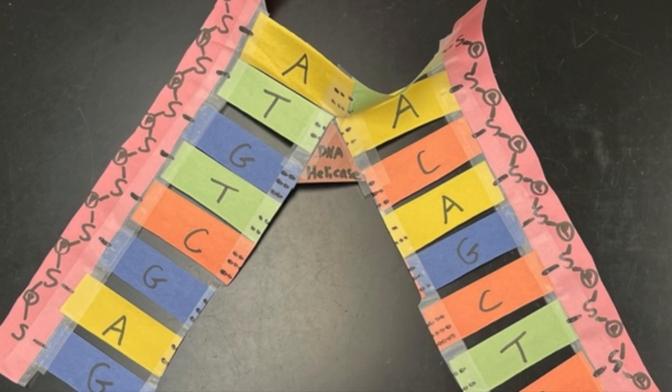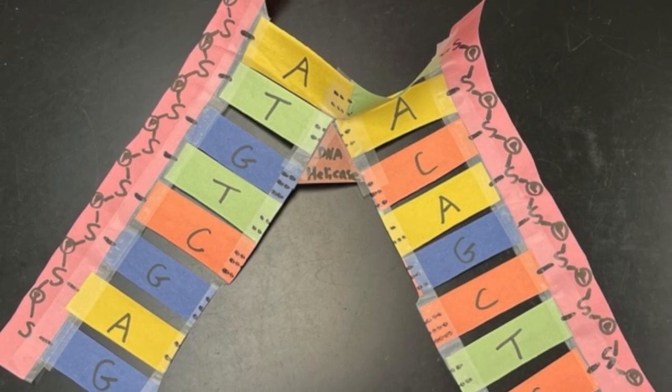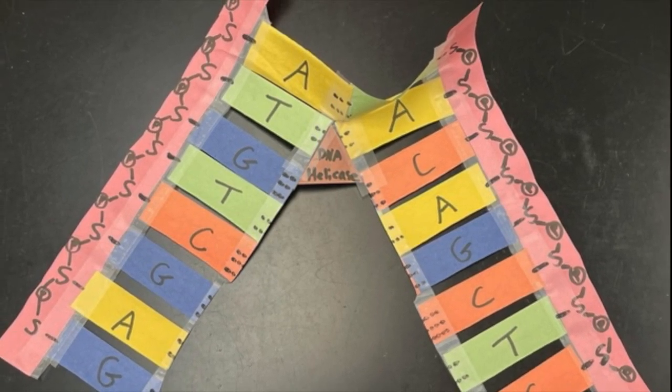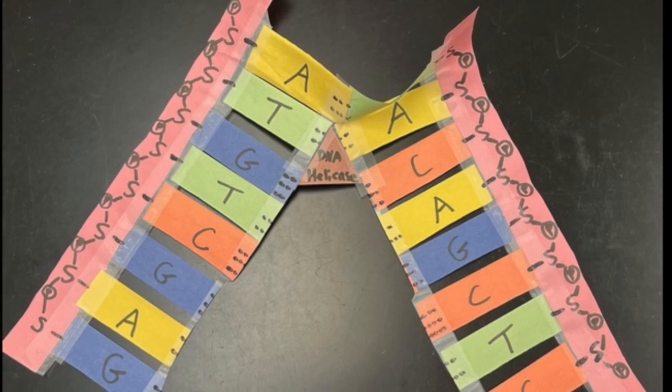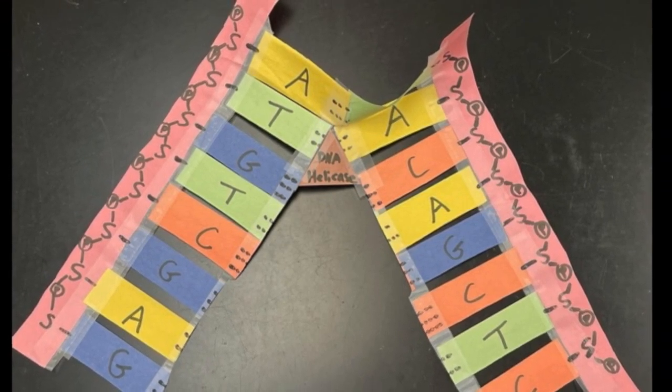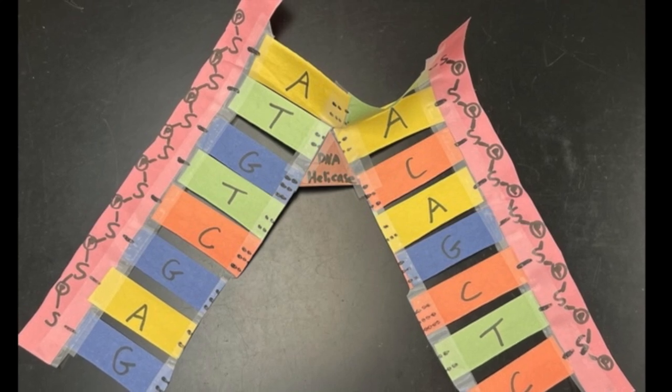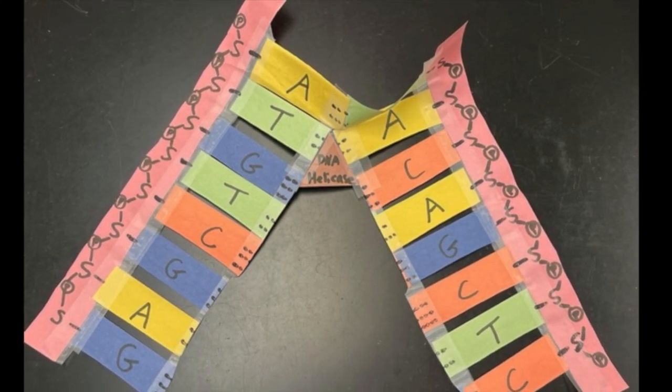So you're going to actually cut up through your model down the middle where the hydrogen bonds were, all the way up to the top, but try to leave at least the top set of base pairs intact, so then you have something to work with.